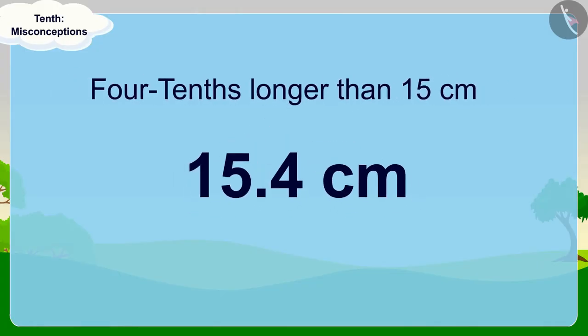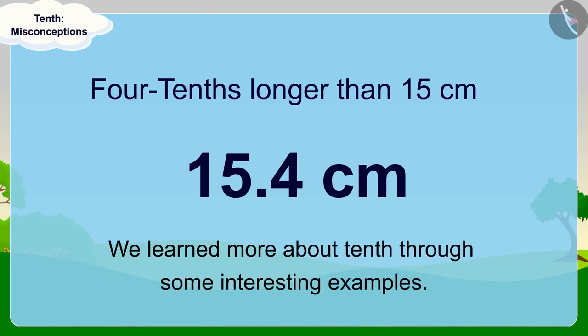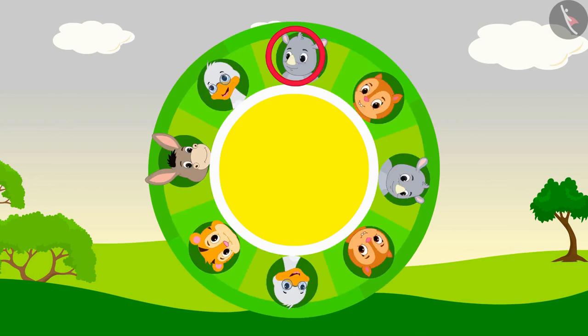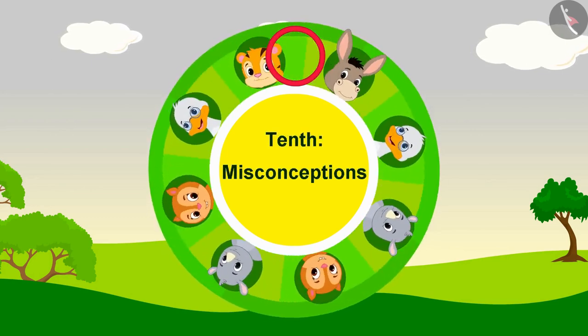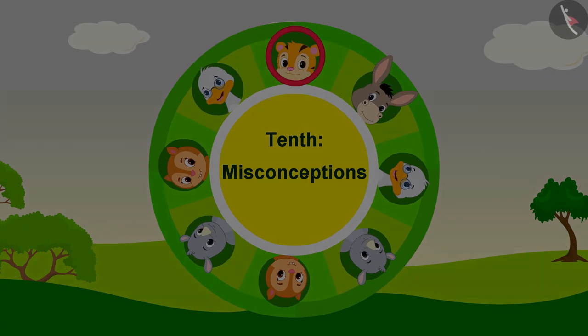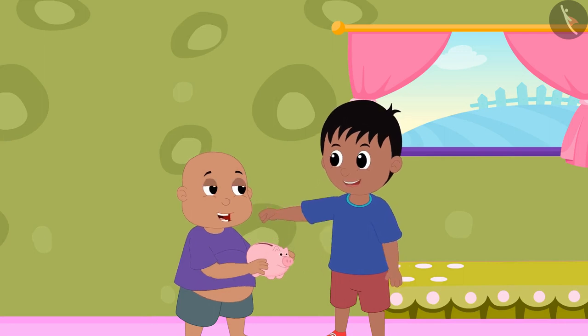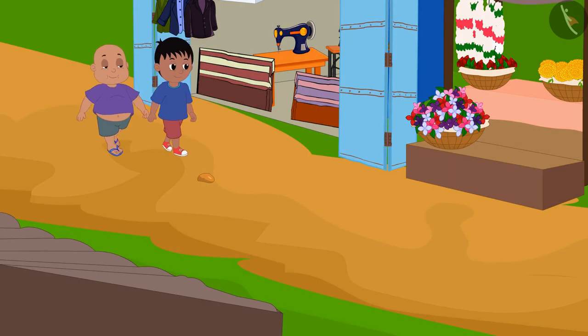Hello children. In the previous video we learned more about tens through some interesting examples. In this video we will see some of the misconceptions related to this. Raju and Babloo collected some money and bought an eraser from the market.